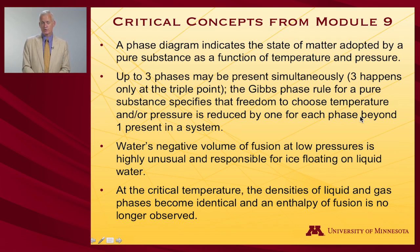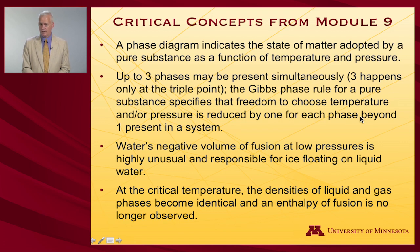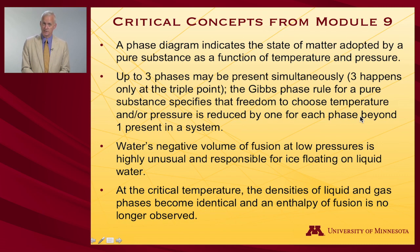A phase diagram indicates the state of matter adopted by a pure substance as a function of temperature and pressure. Up to three phases may be present simultaneously — three only happens at the triple point. The Gibbs phase rule for a pure substance tells us that the freedom we have to choose temperature and/or pressure is reduced by one for each phase beyond only one that is present in a system.